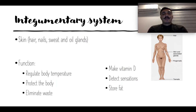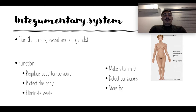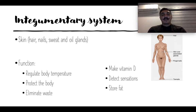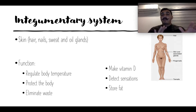Let's start with the organ systems. We'll go through them in basic detail since every week we'll cover one or two. The integumentary system is basically the skin, hair, nails, sweat glands, and oil glands. Remember its structure and main function. The skin regulates body temperature, serves as a barrier protecting us from bacteria and microorganisms, eliminates waste, makes vitamin D, detects sensations, and stores fat.